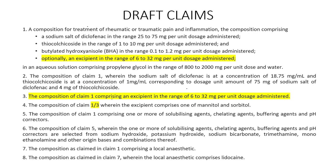In claim 5, a dependent claim, I have defined what additional aspects could be added to the composition as provided in the question. It says it could have one or more of a solubilizing agent, chelating agents, buffer agents, and pH correctors. In claim 6, which is dependent on claim 5, I have further defined what all these agents could be. Again I have used 'wherein' to further define all these agents defined in claim 5.